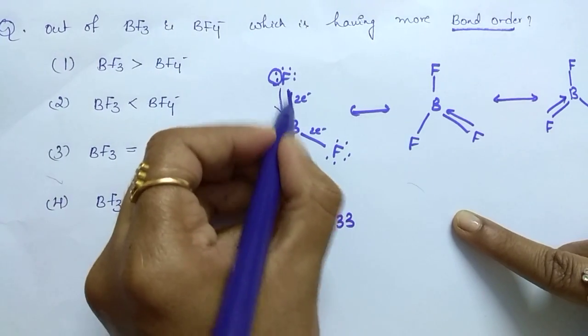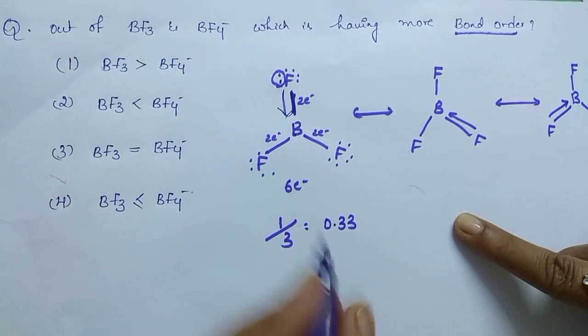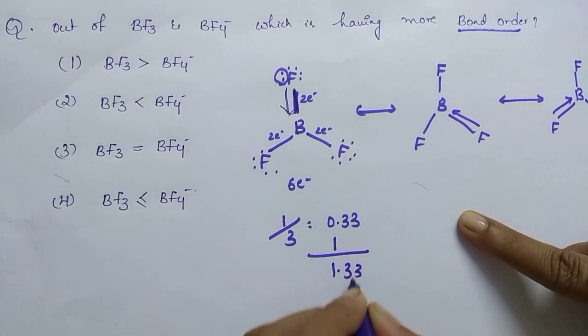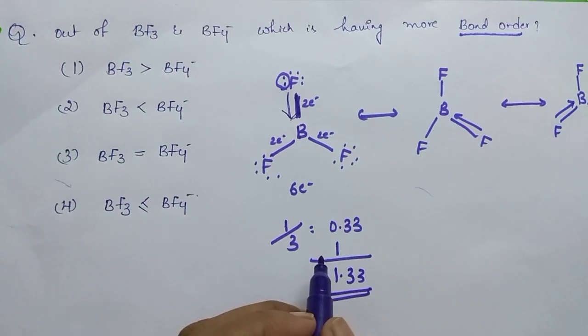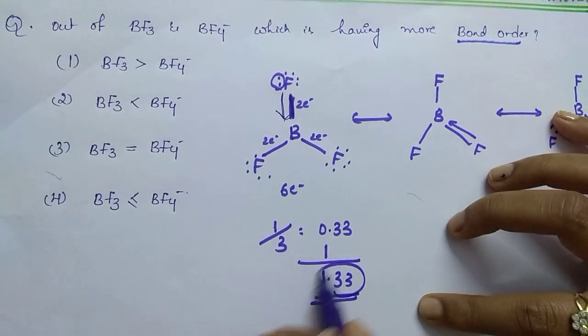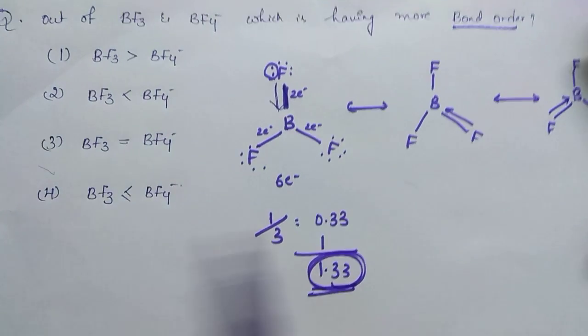But this bond is fixed. Boron and fluorine, this bond. So its bond order is 1. Now add these to 1.33. The number of bonds means bond order between boron and fluorine is what is the bond order? 1.33 in case of BF3.